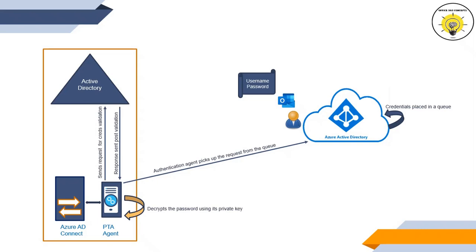The domain controller will evaluate the request and will send a response to the agent. The response can be success, failed, password expired, or user locked out. The authentication agent will send this response back to Azure Active Directory, which will then evaluate the response and respond to the user accordingly. If the sign-in is successful, the user will get access to OWA.